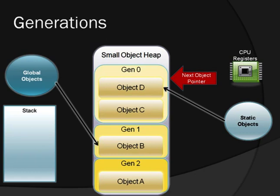If a Gen 0 garbage collection takes place now, the collector would identify object C as rootless, and so overwrite it with object D. Object D will have survived the garbage collection and will be promoted to Generation 1.